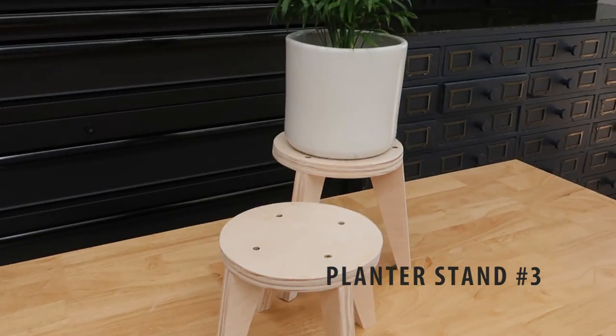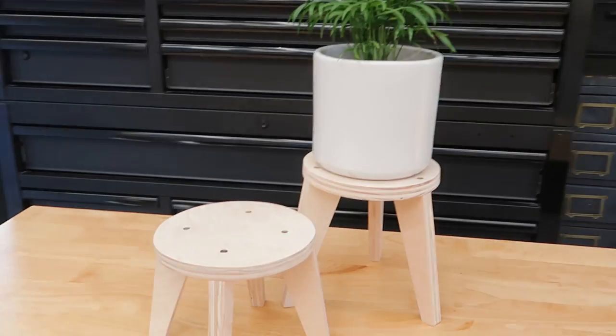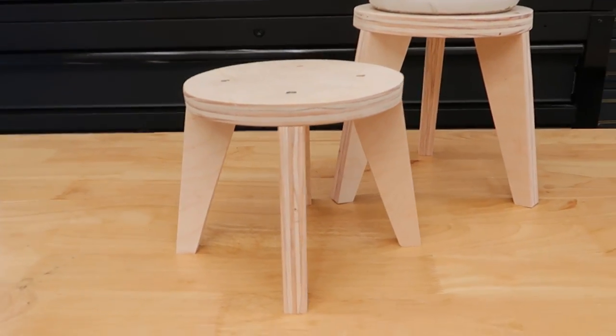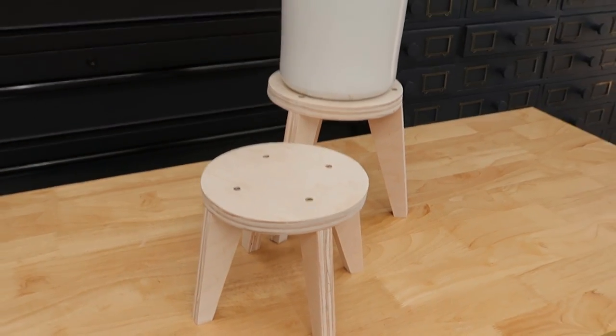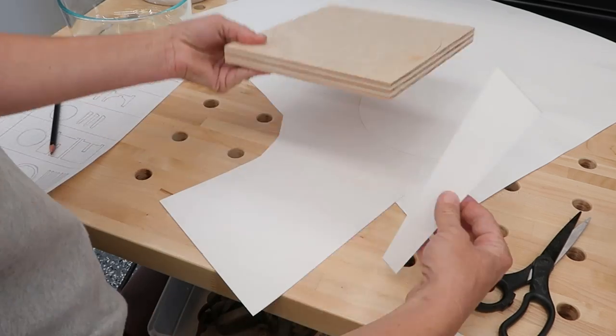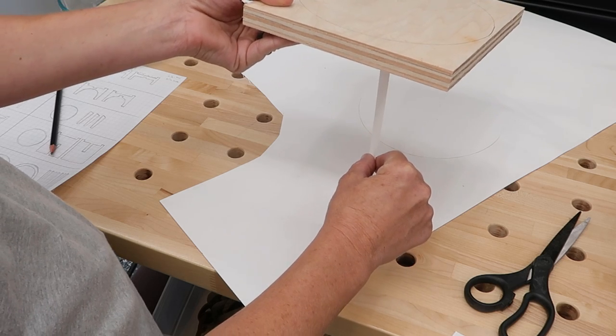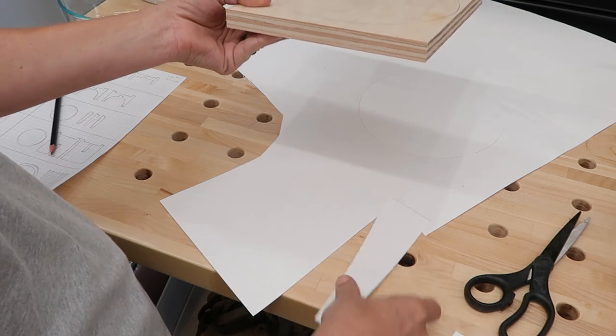Let's now make a third planter base. Planter stand design number three is a simple round circle with either three or four legs. This one was a simple one and we're going to incorporate some of these elements into the next planter stand. I think four would be overkill, so we're going to do three. If that gets too high, I can always chop the legs down.